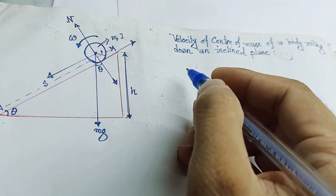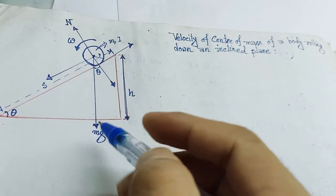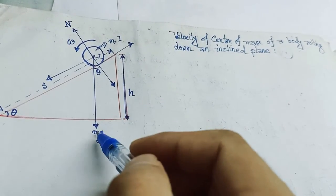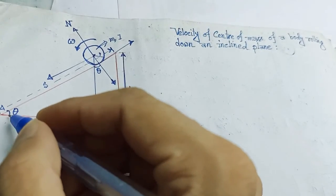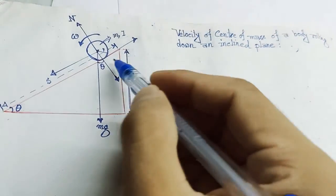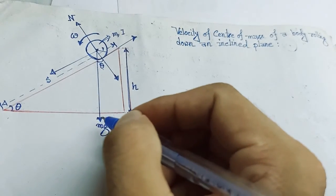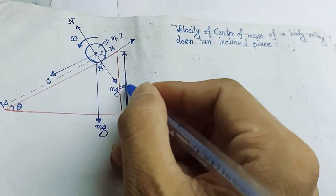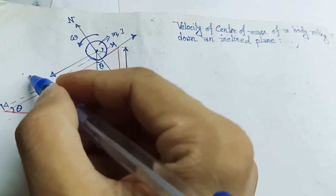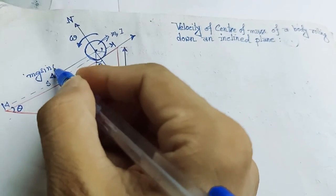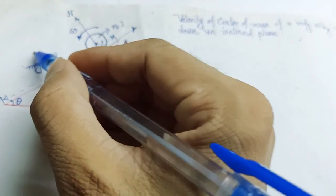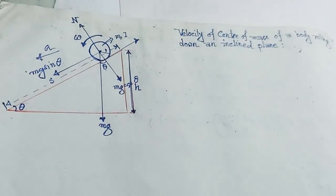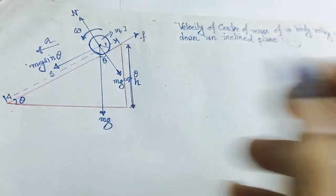We will consider the forces acting on the body. First of all, the self weight of the body — weight mg acting vertically downwards. If the angle of inclination is theta, we divide mg into two components: mg cos theta and mg sine theta. This is the normal reaction of the body, and this will be the direction of acceleration as the body is rolling down. Frictional force will act opposite to its acceleration.